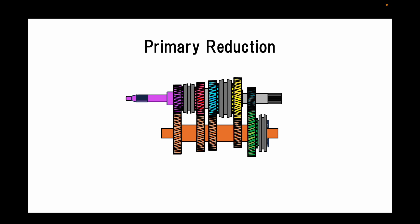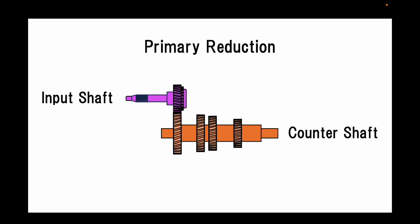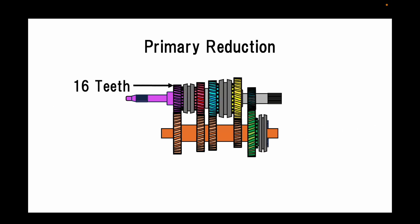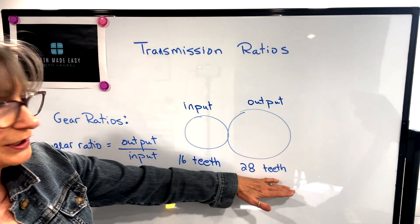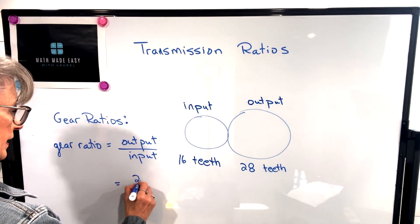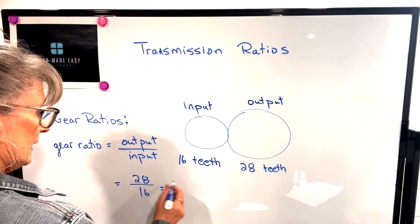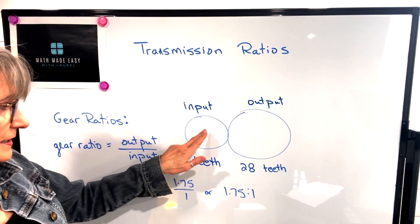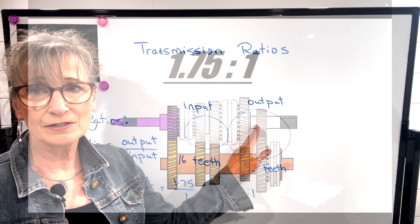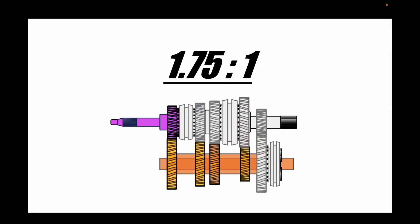Let's apply this to calculating the primary gear ratio in the transmission. The primary reduction ratio starts with the gear on the input shaft meshed with the gear on the counter shaft. The purple gear on the input shaft has 16 teeth and is the input gear. The gear it is enmeshed with is on the counter shaft, has 28 teeth, and is the output gear. So our gear ratio will be output divided by input: 28 divided by 16, which equals 1.75 to 1. That means the input shaft is turning 1.75 revolutions for every one revolution of the counter shaft.